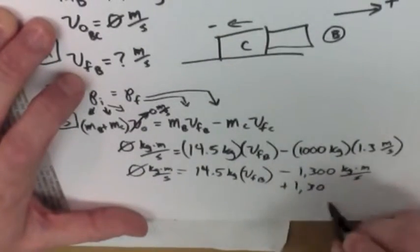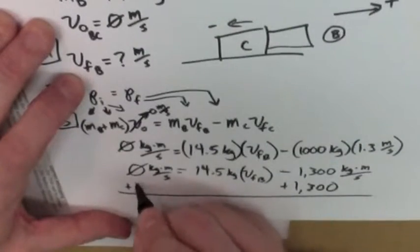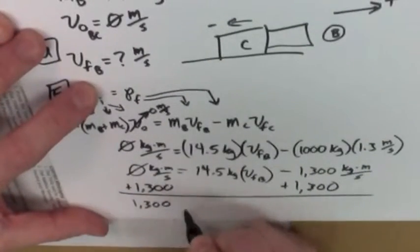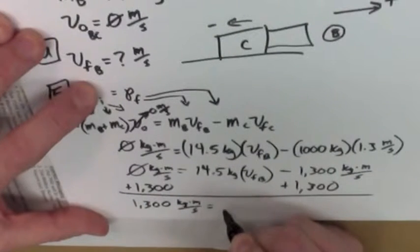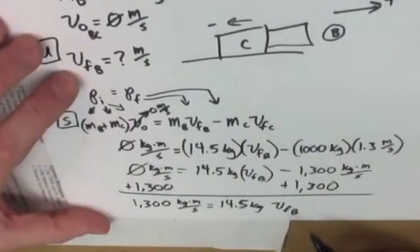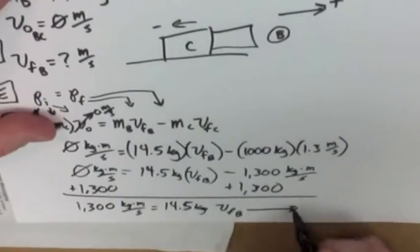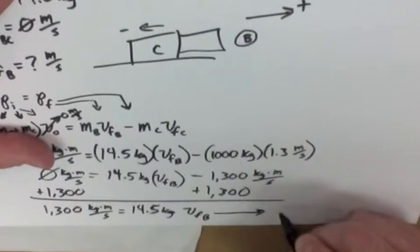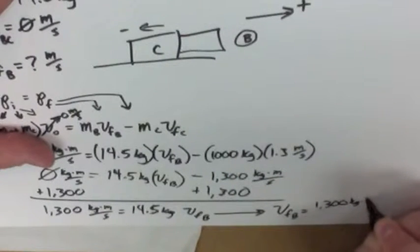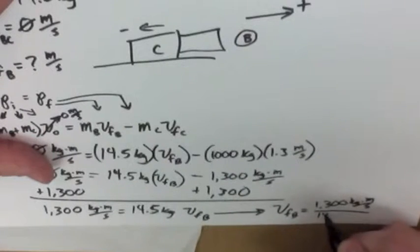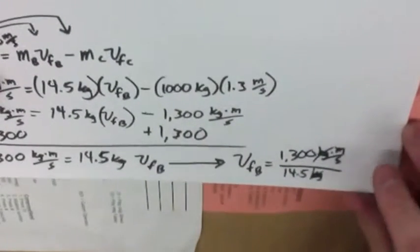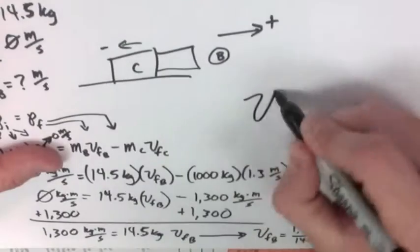And now it's just down to simplifications. So 1,000 times 1.3 is going to be 1,300 kilograms times meters per second. And then you're going to have your 14.5 kilos times your VFB. You can do your parentheses if you'd like. Equals zero kilogram meter per second. Add 1,300 to both sides for speed sake. I'm not going to write the units because I'm just, you can see them right there. And then we're going to have 1,300 kilogram meters per second equals 14.5 kilograms. Now it's all down to the calculator to get that final answer. You're just going to divide both sides by 14.5. So your VFB is going to be 1,300 kilogram meter per second divided by 14.5 kilograms. Notice the kilograms cancel. You're going to end up with your meters per second for your unit.